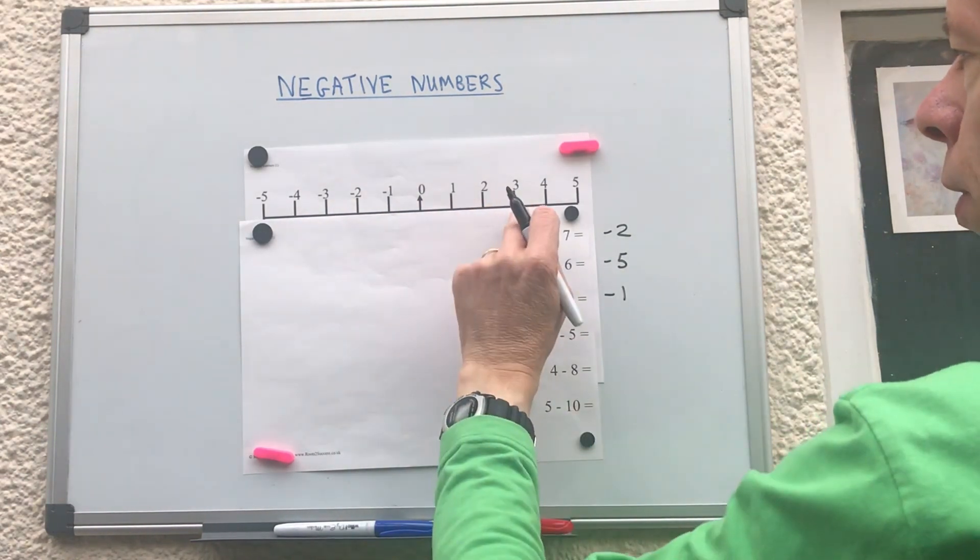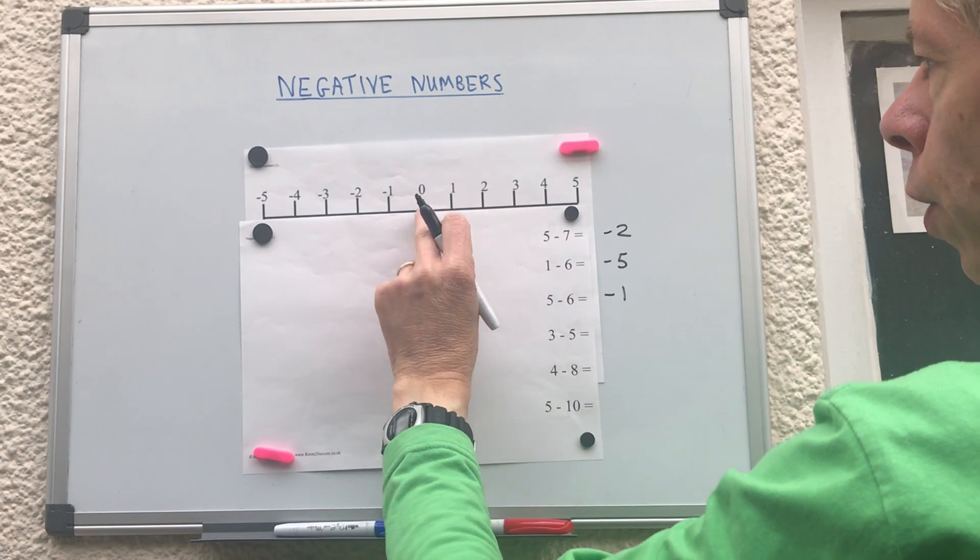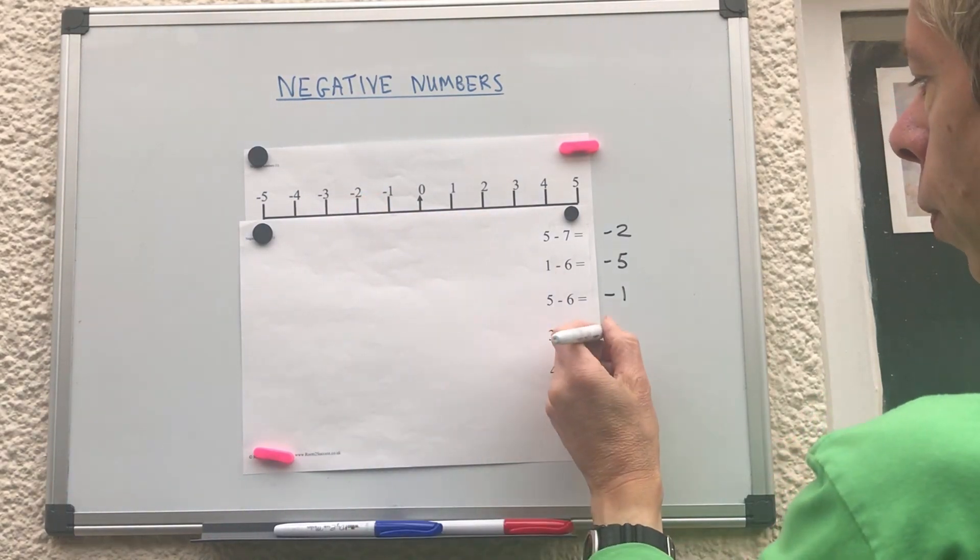Three take away five. Start on three, go back five. One, two, three, four, five. So we end up minus two.